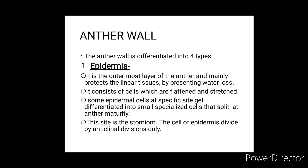The anther wall is differentiated into four layers. Epidermis: it is the outermost layer of the anther and mainly protects the inner tissues by preventing water loss. It consists of flattened and stretched cells. Some epidermal cells at specific sites get differentiated into small specialized cells that split at anther maturity — this site is called the stomium.